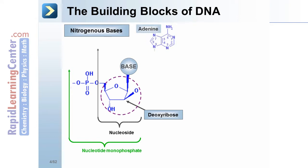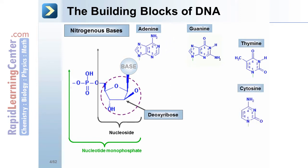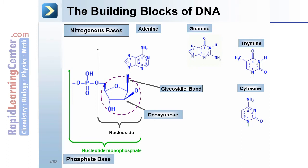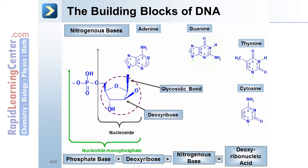Nitrogenous bases. The nitrogenous bases include adenine, guanine, thymine, and cytosine. Notice how the nitrogenous bases attach to the ribose. This is called a glycosidic bond. Phosphate base plus the deoxyribose plus the nitrogenous base equals a deoxyribonucleic acid.